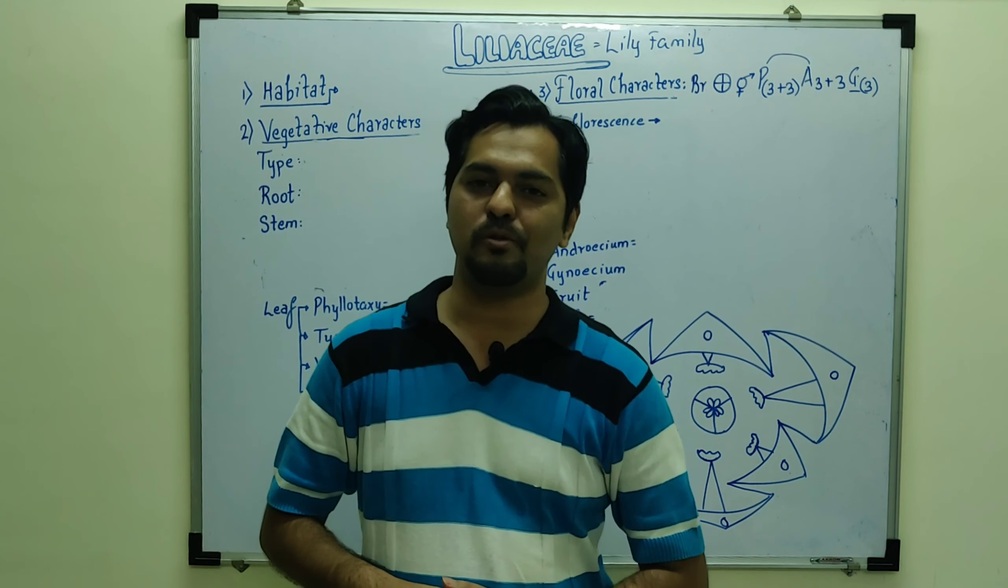That is the Lily family. Now after discussion of Fabaceae, Solanaceae and Brassicaceae, Lily family habitat, vegetative and floral characters discusses with the floral formula and the floral diagram. And we should know that this is a trimerous symmetry.